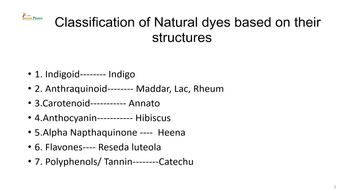So, there is indigoid dye which encompasses indigo; anthraquinoid dyes which has madder, lac, rheum; carotenoid dye which is an example for annatto; anthocyanin which is hibiscus; alpha naphthoquinone which is henna; flavones which is reseda, lutella; polyphenols or tannins which is catechu. So, this is based on the type of structure of the natural dye.